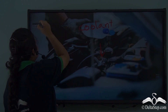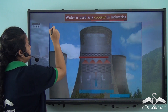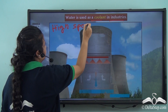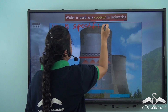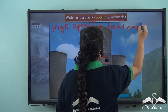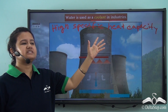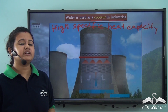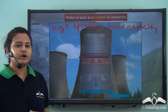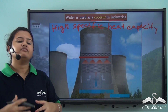This is because of a specific property of water — water has high specific heat capacity. Owing to its high specific heat capacity, water can tolerate high temperatures, that is, it does not get easily heated up. For this purpose, water is also used as a coolant in industries.